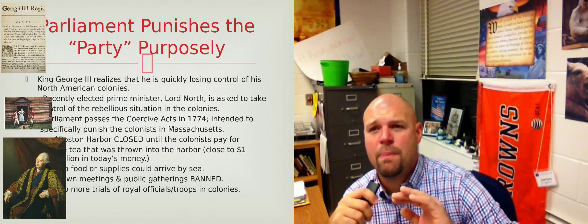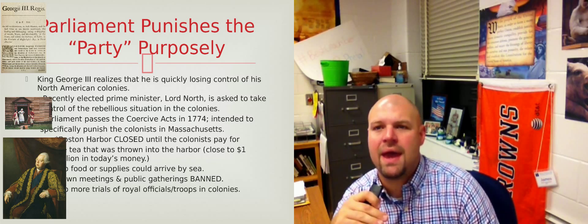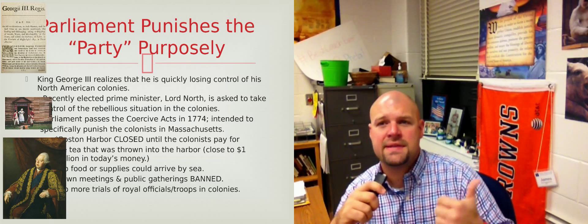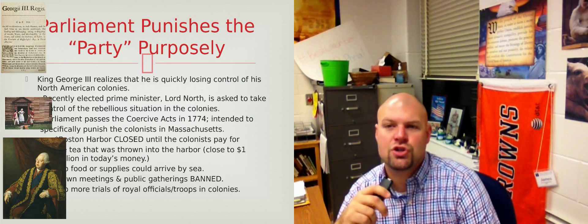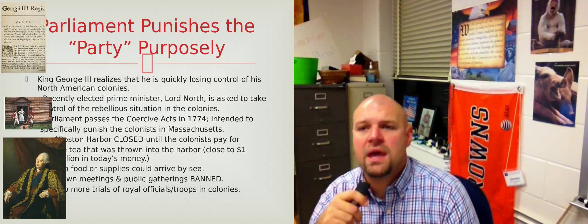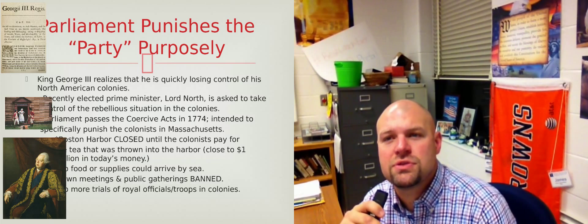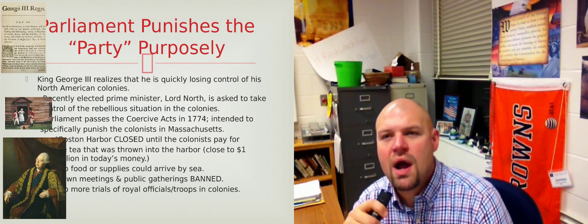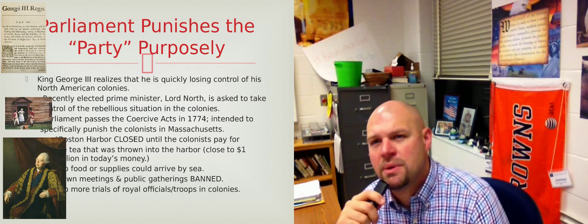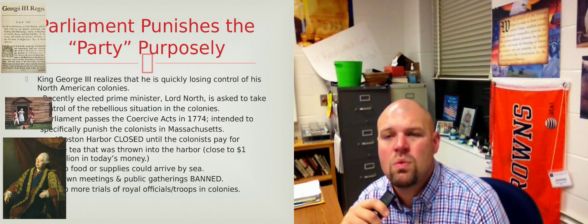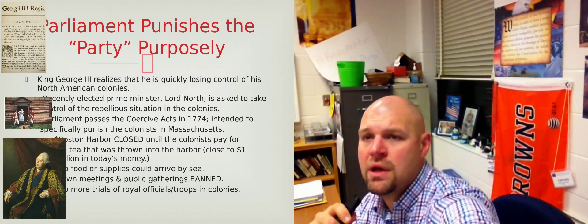Additionally, going forward, all public meetings and gatherings are banned, which is going to strike a nerve with the colonists because their ability to speak freely in public and to meet and assemble — whether at a tavern, a church, or at the Liberty Tree or Liberty Pole — is something they believe they have guaranteed from the English Bill of Rights. Parliament is now restricting something embedded in their English constitution. And additionally, there will be no more trials of royal officials or troops in the colonies — Parliament is taking a stand that no longer will anyone representing the Crown go on trial, in reference to what happened with the Boston Massacre.